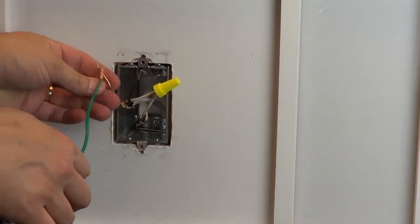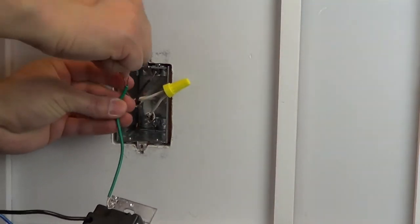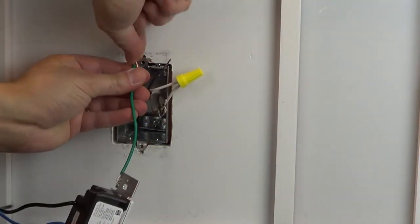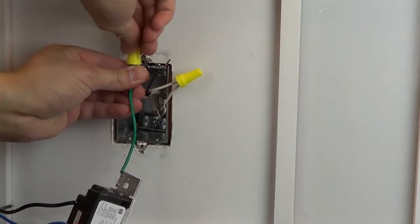Connect the ground wire to the green wire on your new dimmer using a wire cap. If you do not have a ground wire in this wall box, simply place a cap on the green wire on the dimmer.